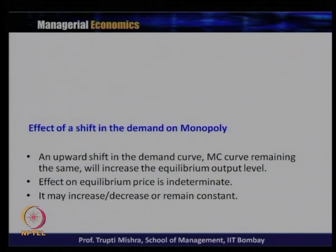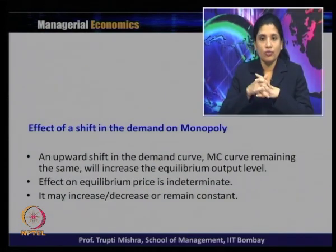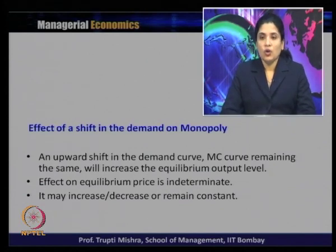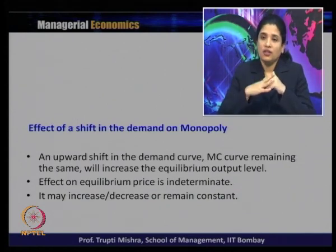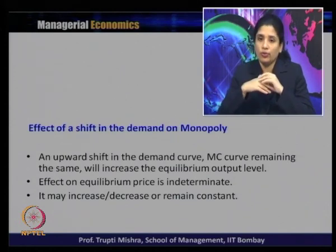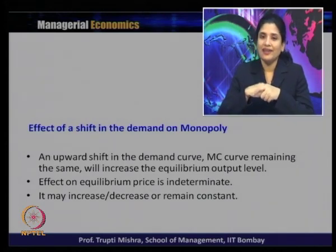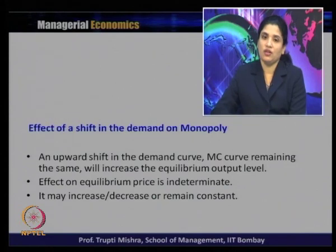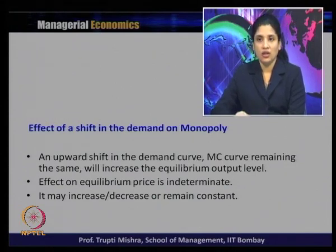Next, we see the effect of a shift in demand on monopoly equilibrium — how a change in demand affects equilibrium price and quantity of the monopolist. An upward shift in the demand curve with marginal cost remaining the same will increase equilibrium output. However, the effect on equilibrium price remains indeterminate — we need to check under which conditions price may increase, decrease, or remain constant when demand shifts upward.